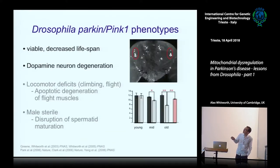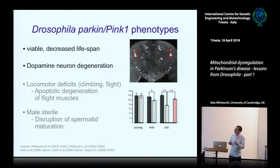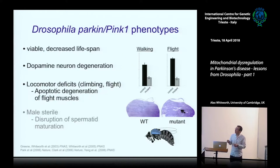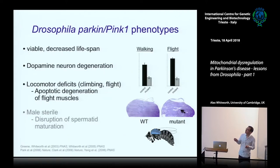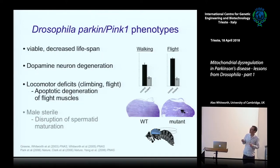Looking at the brain and specifically at the dopaminergic neurons, we can see there is an age-related decline, which is useful for us and mirrors the disease scenario somewhat. Considering the disease scenario, we also have assays for locomotor deficits - assays for walking, climbing ability, and flight. You'll be meeting these a bit later on this afternoon in the practical session.